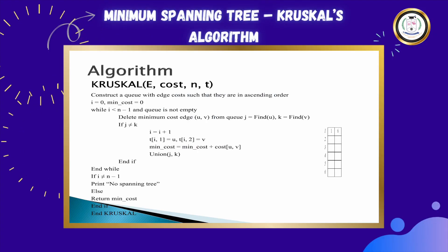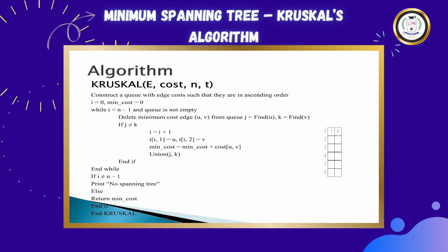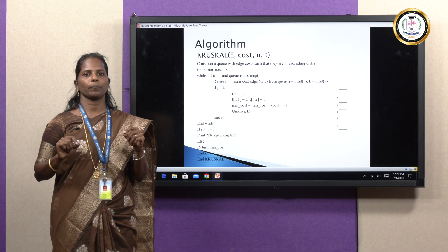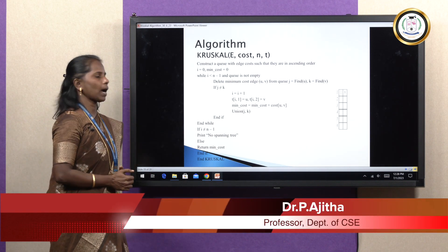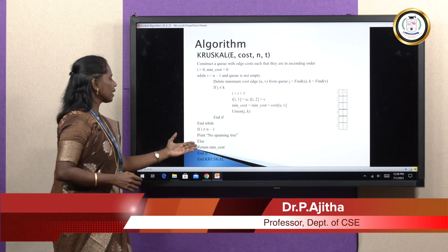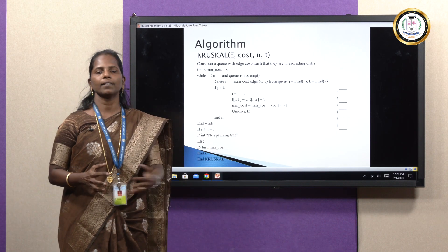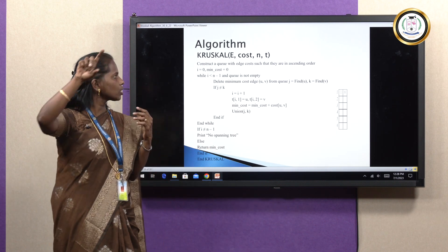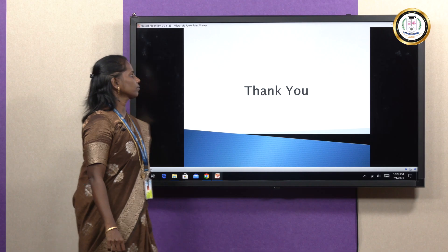This process repeats until I is less than N minus 1 and Q is not empty. After finishing, if I is not equal to N minus 1, we will not get the spanning tree. Otherwise, we get the spanning tree and can return the minimum cost to visit all the nodes. That is about Kruskal's algorithm. Thank you.